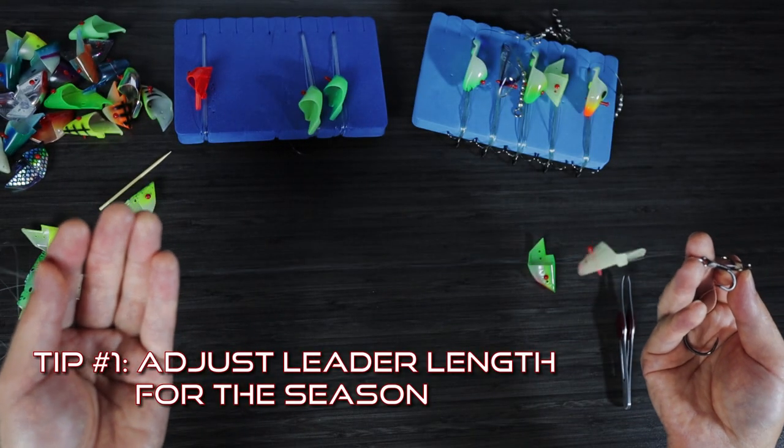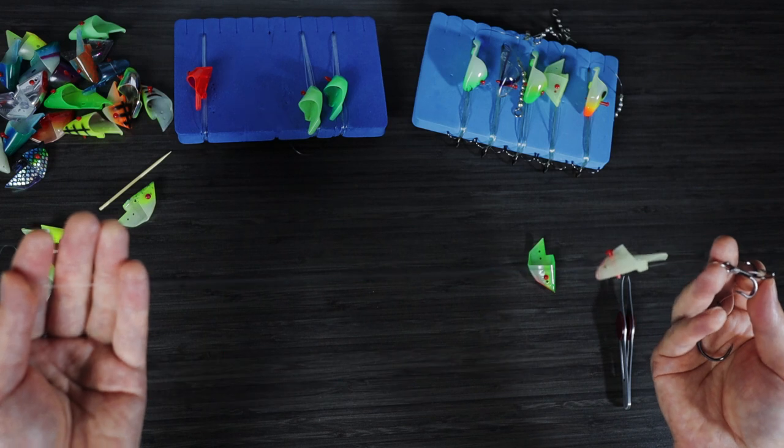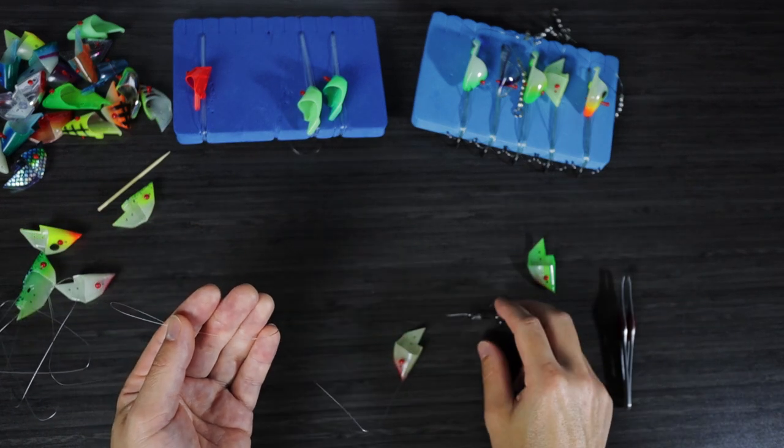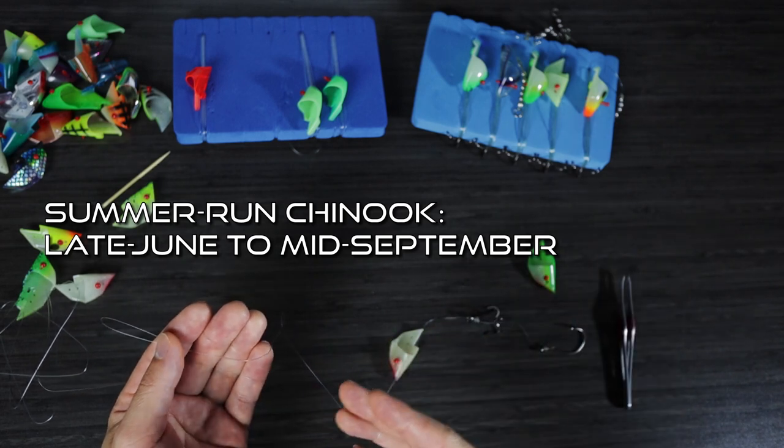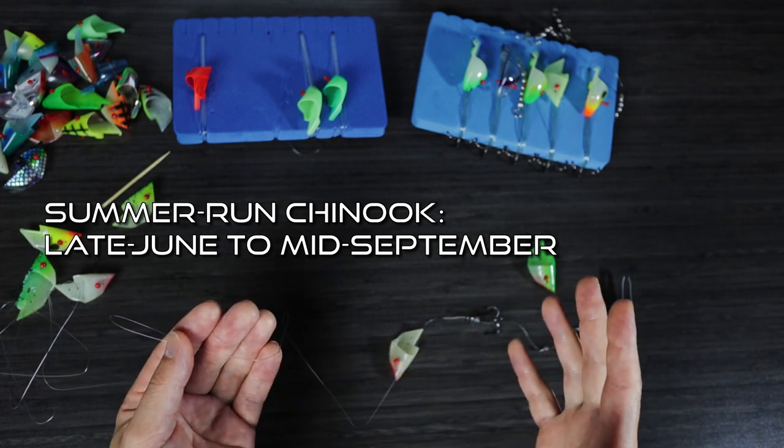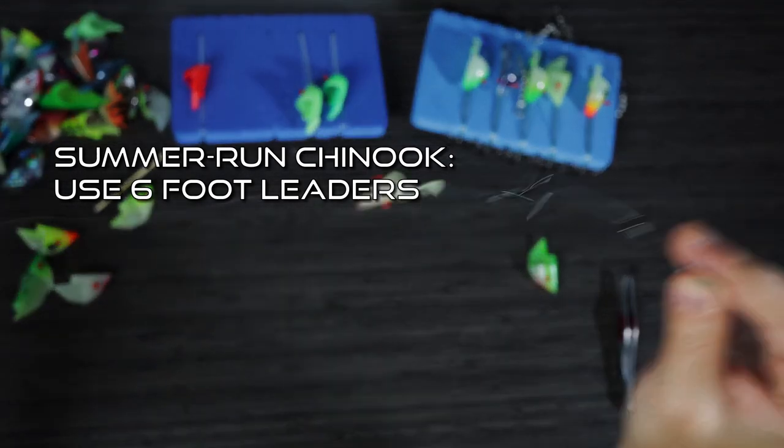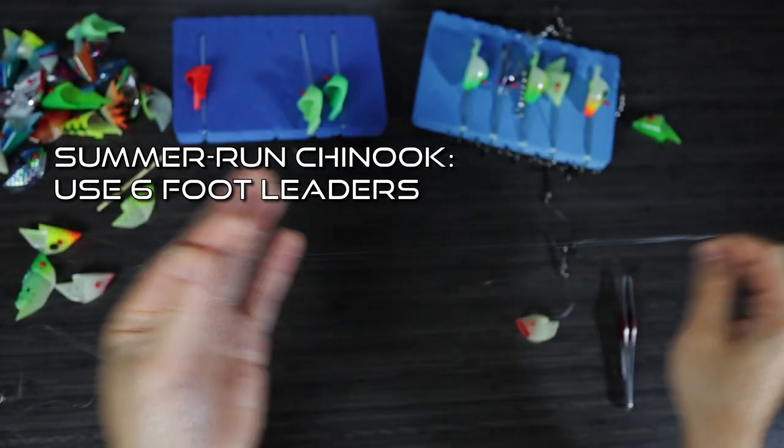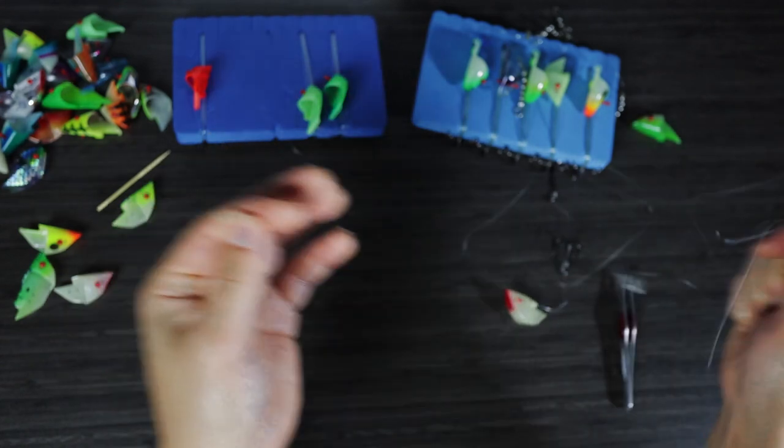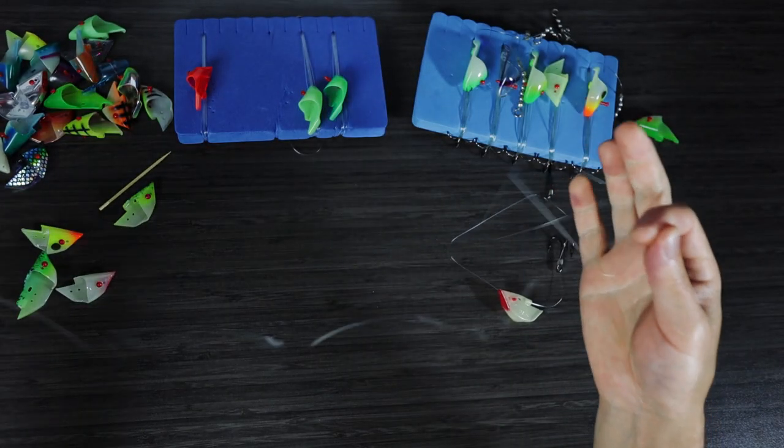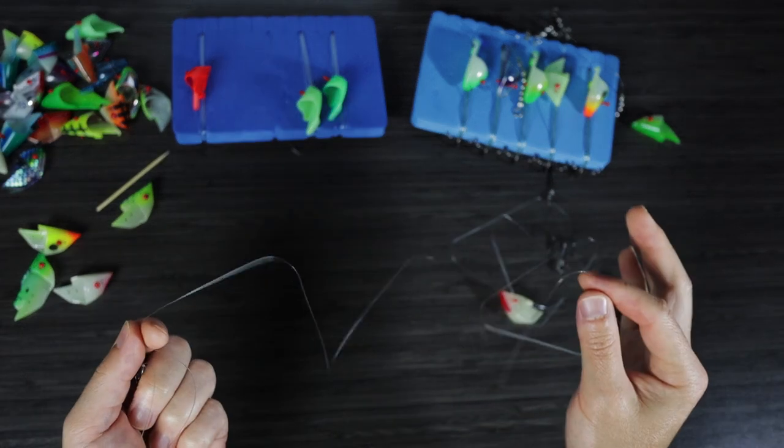All right, so tip number one is adjust your leader length for the season. So up here on the coast of BC, we are fortunate to get two different seasonal runs of Chinook salmon. The larger the two is in the summer run, which starts in late June and runs till about mid-September. For the summer runs, we usually use six foot leaders from the end of the trailer hook all the way out to the bead chain, six feet. And this seems to give us the right amount of action on the bait for these fish to bite.